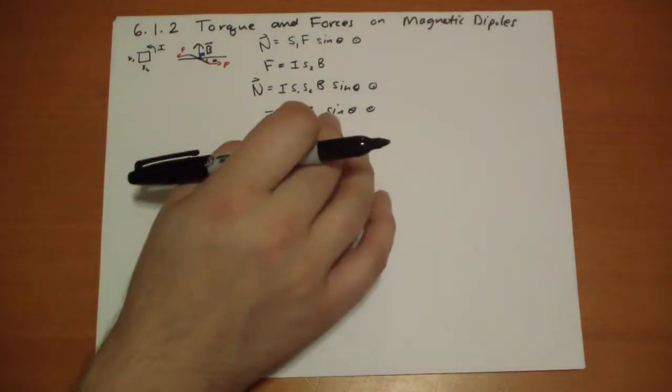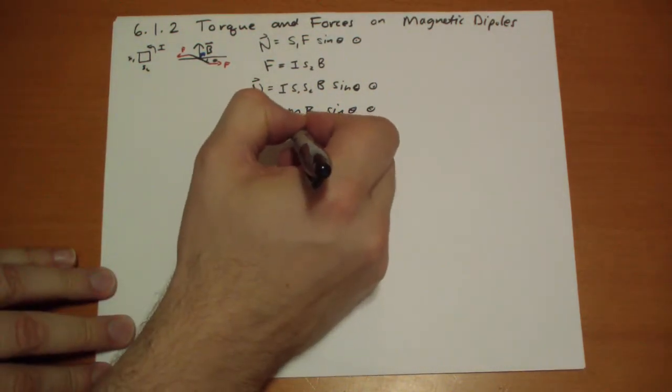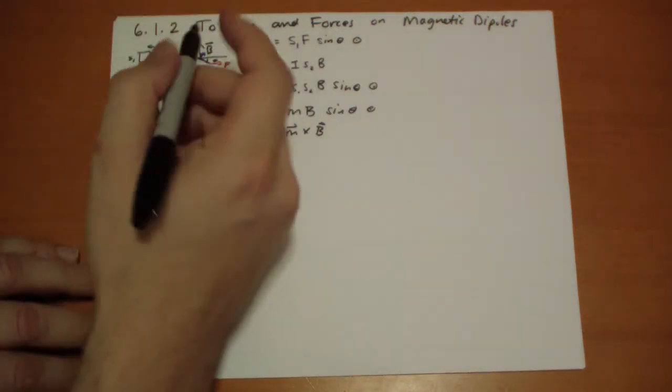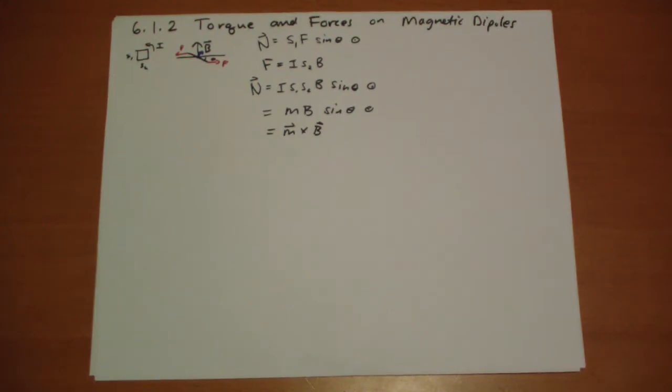Well this is just the formula for the cross product of M and B. Because B cross M, that angle between there is the same as the angle down there.